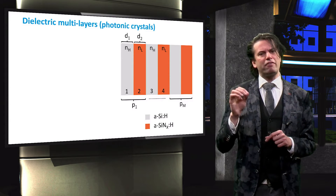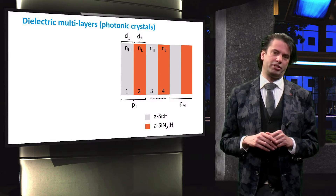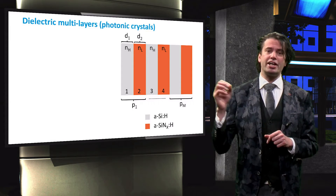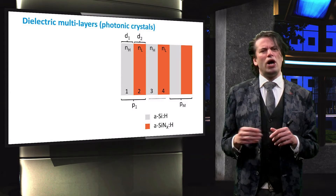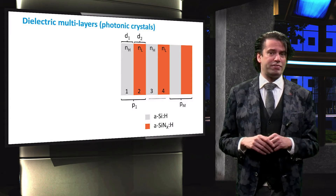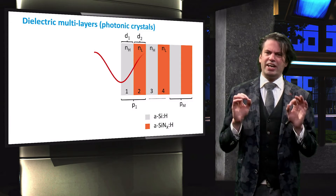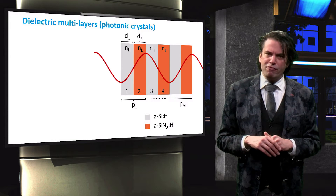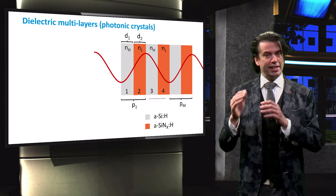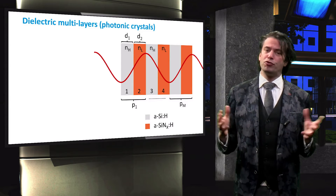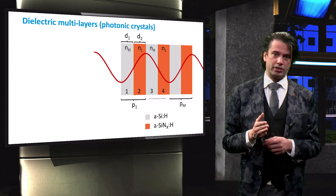A dielectric backreflector consists of multiple layers of two different dielectric materials. The first layer has a high refractive index, denoted by N_H, while the second layer has a low refractive index, indicated by N_L. The red line depicts a wave propagating through the dielectric backreflector. At each interface, a fraction of the wave is reflected, while the remaining fraction is transmitted.